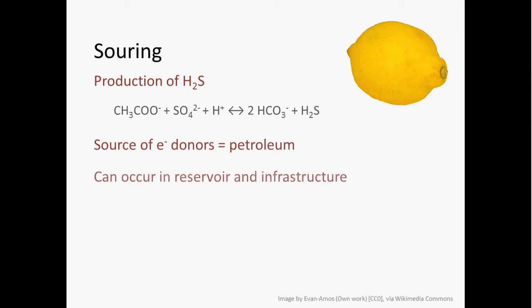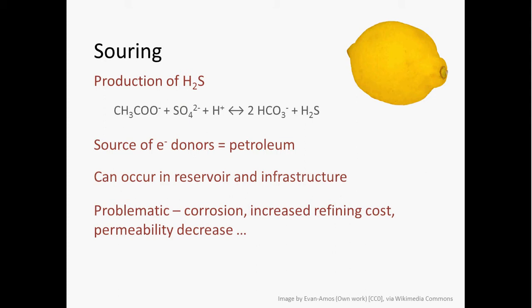This can occur in the reservoir, but also in the infrastructure used to extract oil and gas. It's problematic because it can cause corrosion of any metal that sulfur encounters in the infrastructure. It increases the refining cost because that sulfur has to be removed from the product. And if it leads to precipitation of metal sulfide minerals, it can decrease the permeability of the formation, making it more difficult to exchange fluids with a subsurface reservoir.